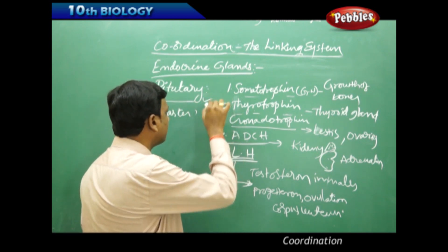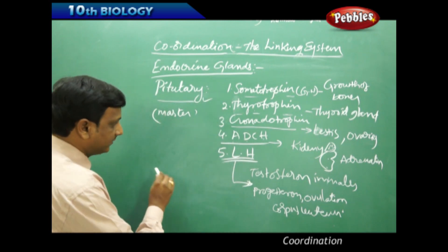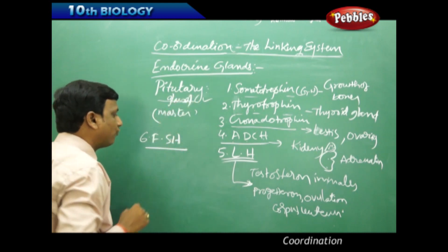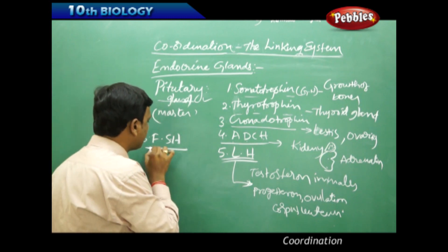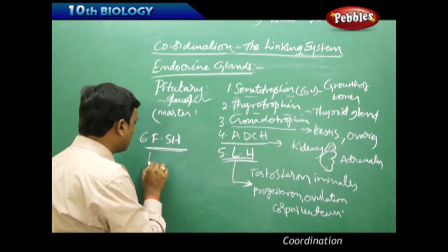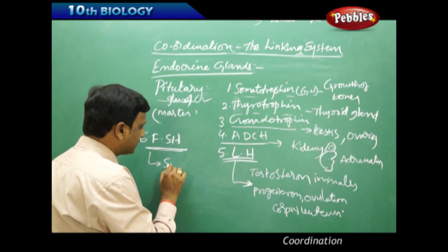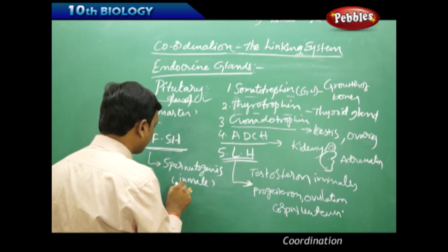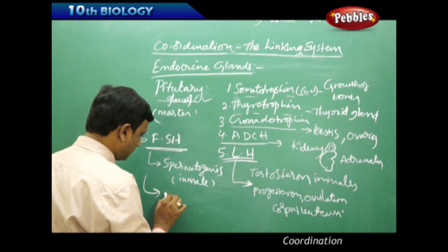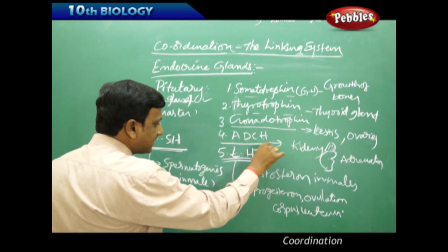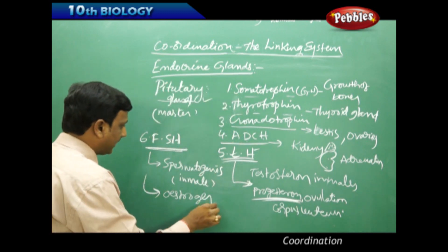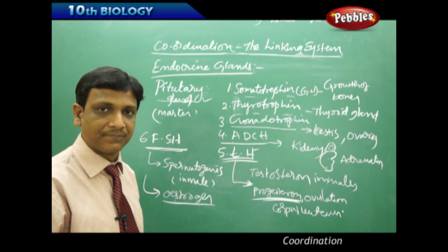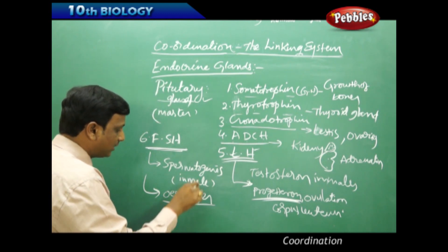The sixth hormone secreted by the pituitary gland is FSH, the follicle stimulating hormone. FSH also contributes to the process of reproduction. In males, it helps in spermatogenesis — the formation of sperm cells. In females, it helps in the formation and secretion of the hormone estrogen, while luteinizing hormone helps in the formation of progesterone.